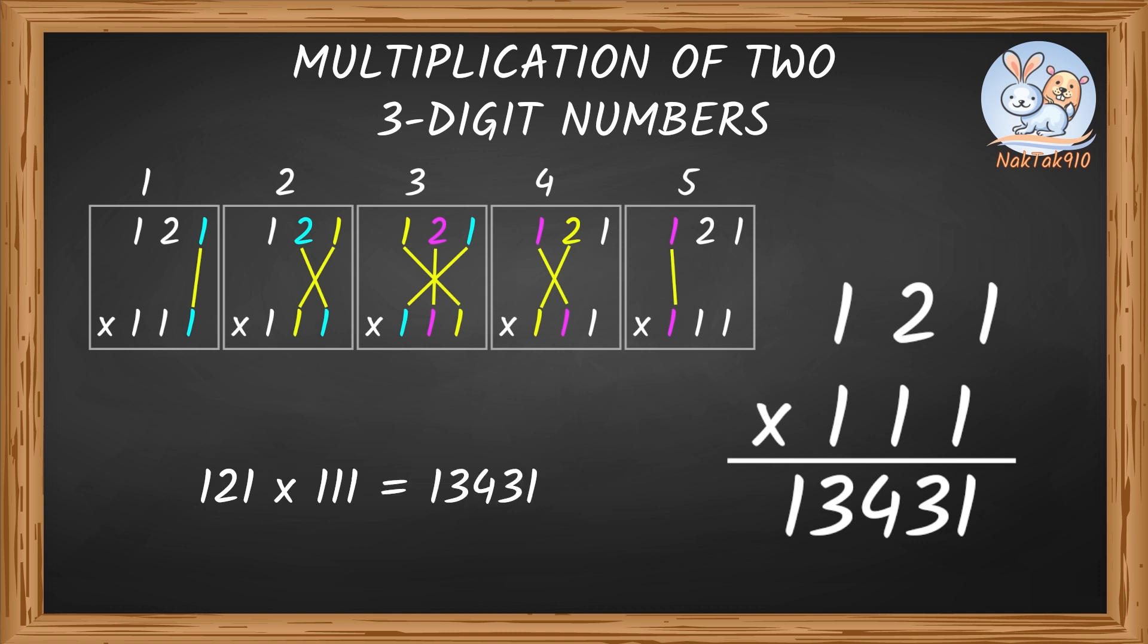For multiplication of any two three-digit numbers, we can follow these five simple steps. Really? Can I try this with an example? Here, try these.